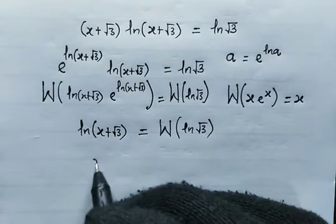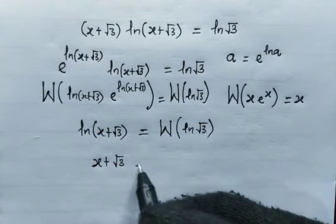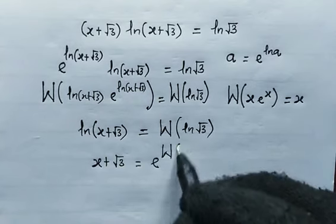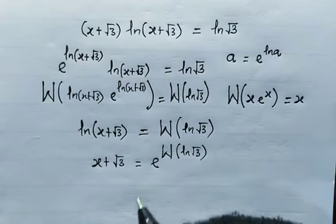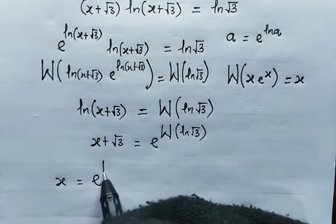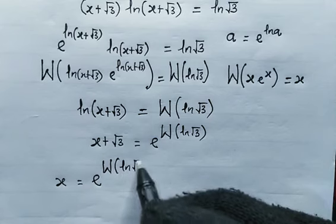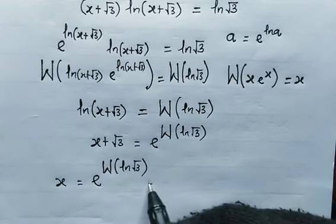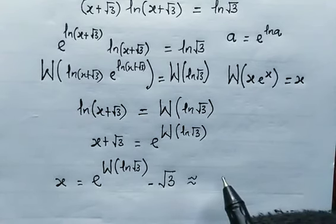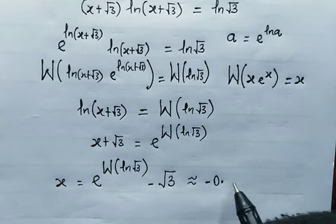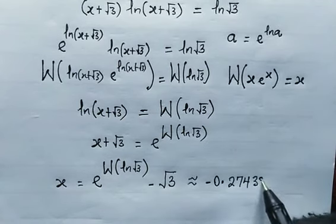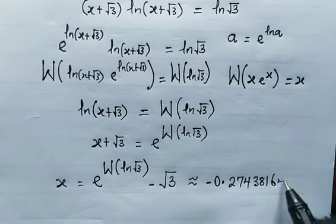From here, we have x plus root 3. The power rule here will be e to the power of the W of the natural log of root 3. Subtract root 3 from both sides. And here comes the value of x, which is e to the power of the Lambert W function of the natural log of root 3 minus root 3. And this is approximately equal to negative 0.274381647.